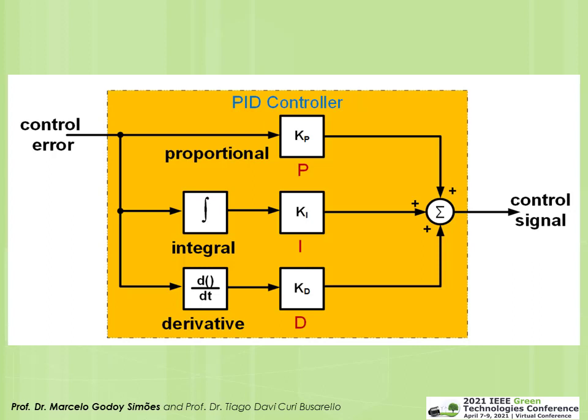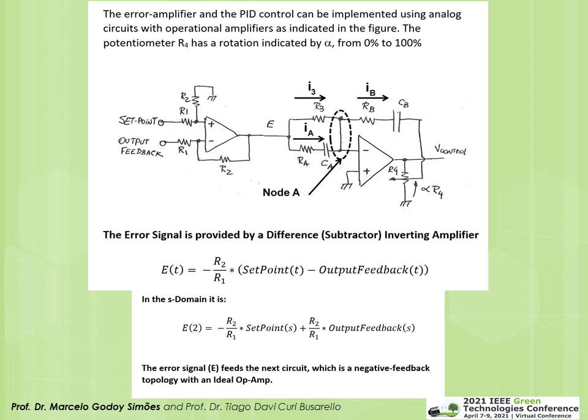In some systems a derivative is needed for compensation. The first op-amp performs a subtraction: setpoint minus feedback gives error e. That error goes into the next circuit, which has negative feedback with two capacitors Cb and Ca. The feedback from the output comes through Rb and Cb, but also through a potentiometer that gives a proportion alpha·R4 of the output. At node A, Rb connects to the potentiometer, and there is a resistor R3.